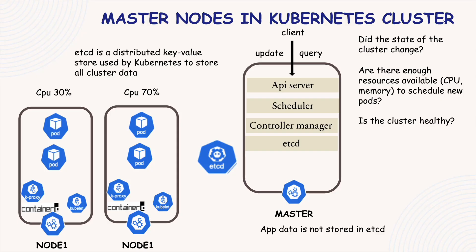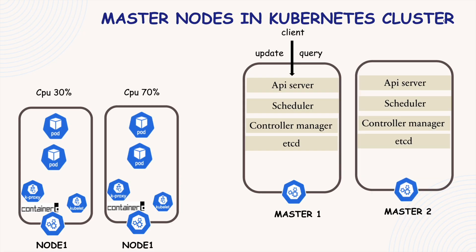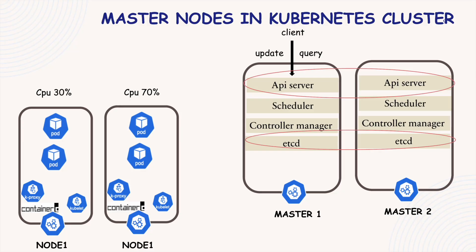Now that you understand how critical the master components are, especially etcd, what happens if a master node goes down? In a real-world Kubernetes deployment, you will usually have multiple master nodes for high availability. Each master runs its own set of processes. The API server is load balanced, and the etcd state forms a distributed system across all masters. This makes sure that even if one master fails, the others can keep the cluster running without downtime. The beauty of Kubernetes is you can scale your cluster very easily.